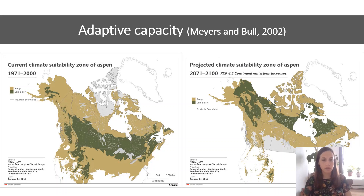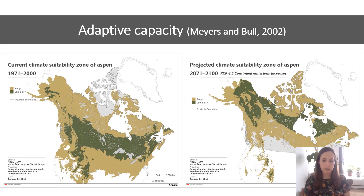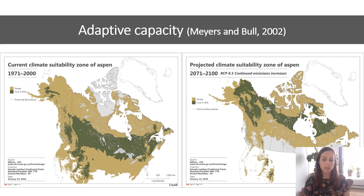However, climate zones are shifting northwards faster than the ability of many tree species to migrate, and phenotypic plasticity alone is not enough. Therefore these species are pressured to adapt. It is essential to understand the ability of these forest tree species to persist under the projected climate change — in other words, to understand their adaptive capacity. Due to the wide distribution of aspen, it's an excellent species to study adaptive capacity.